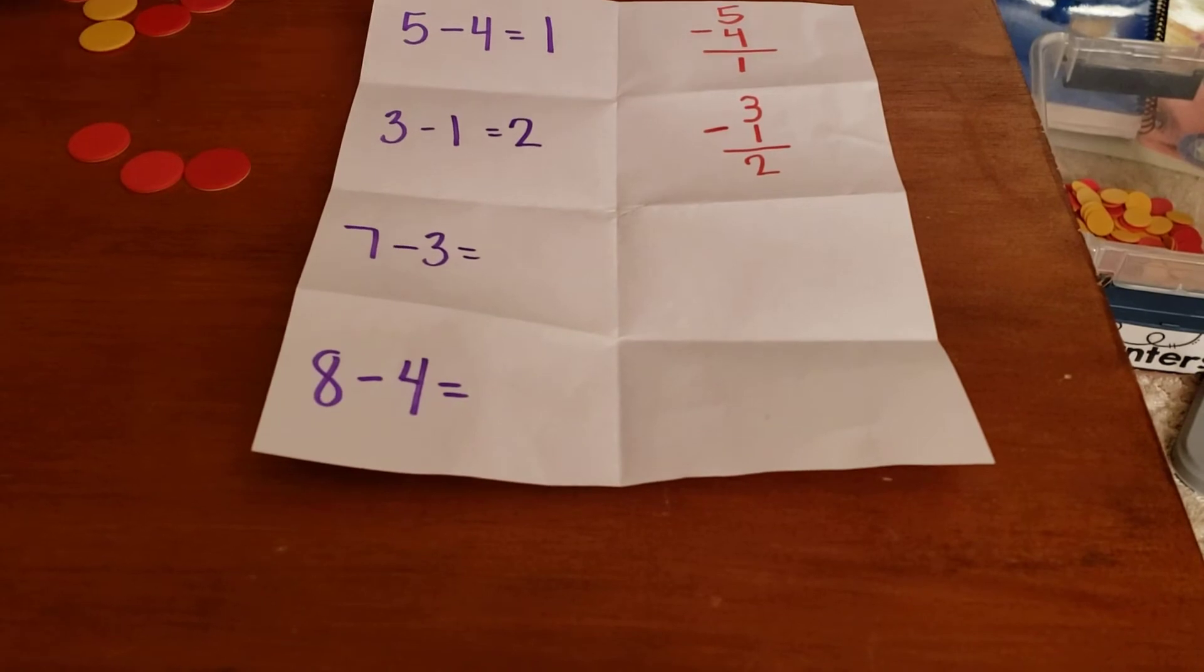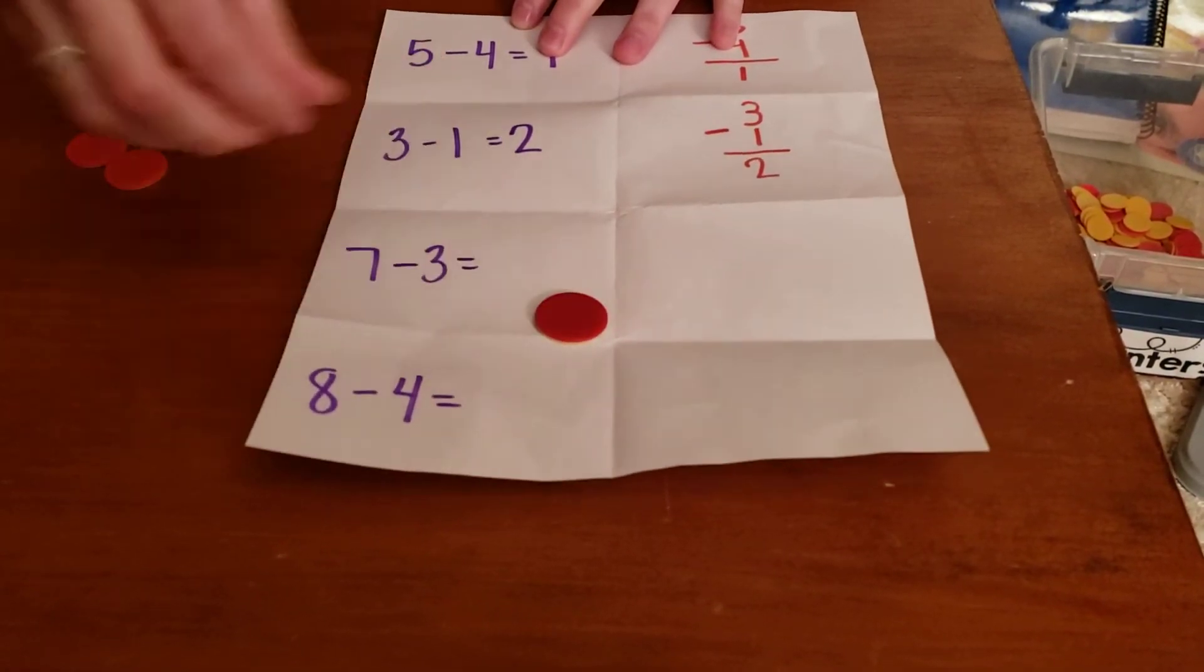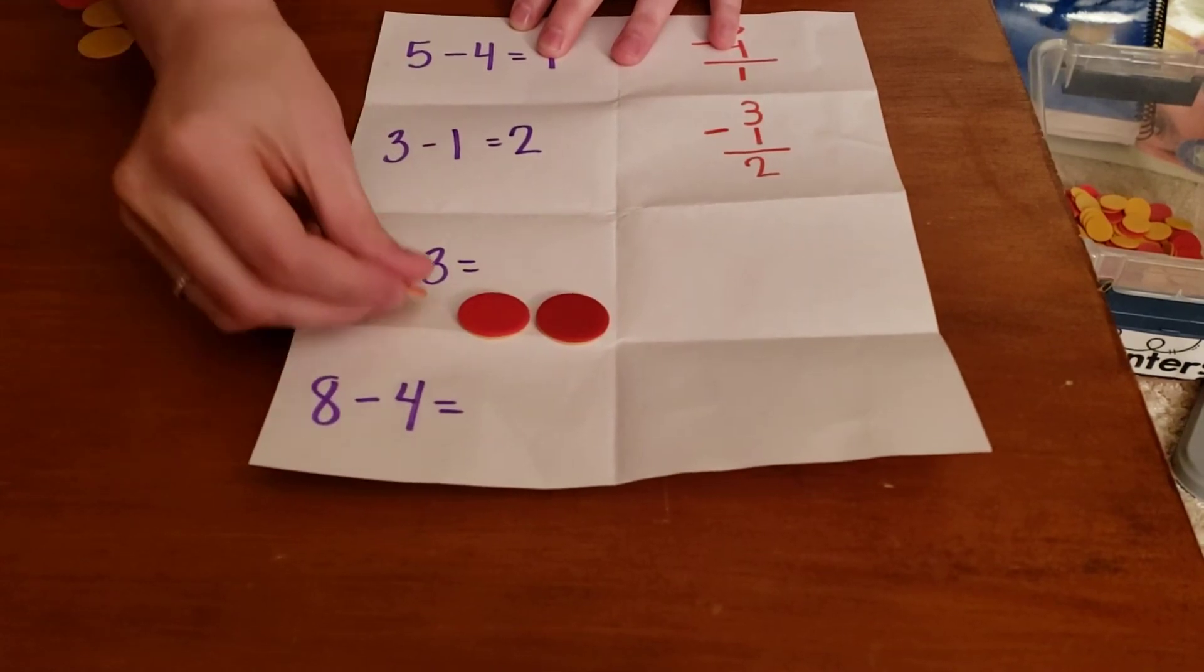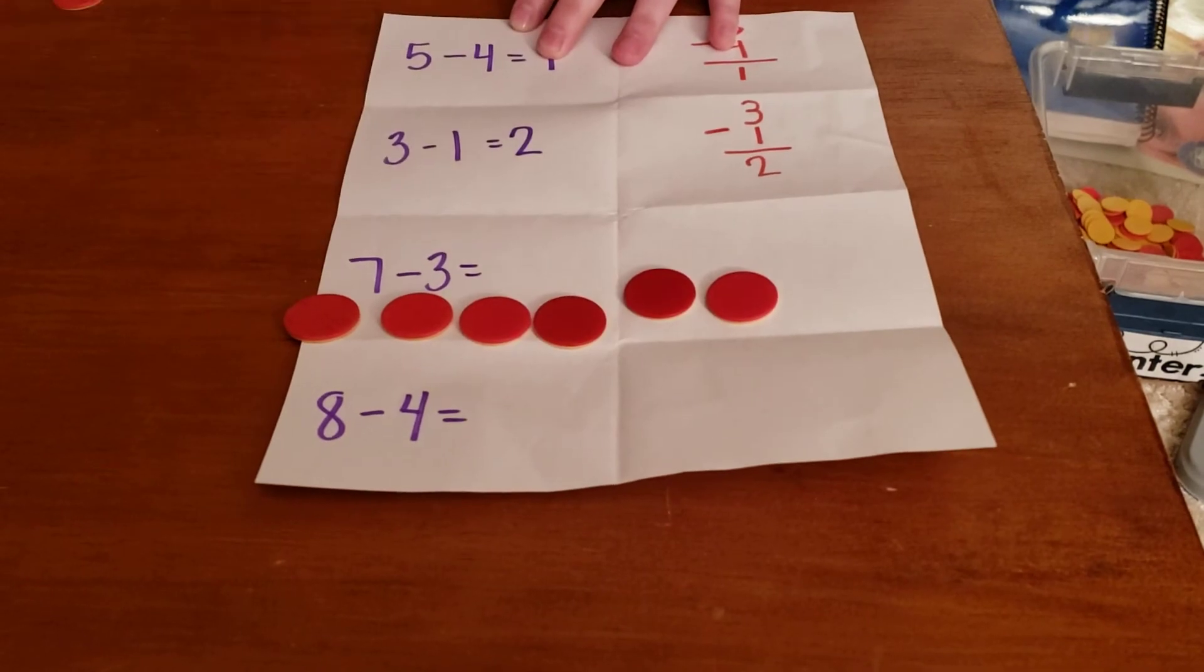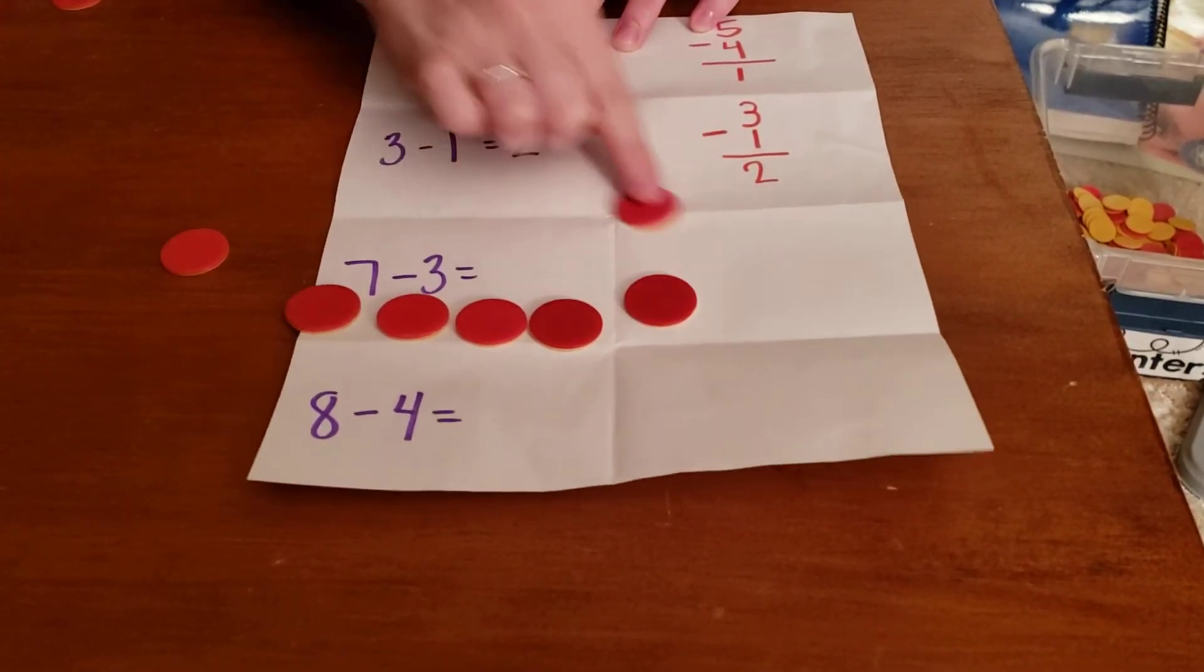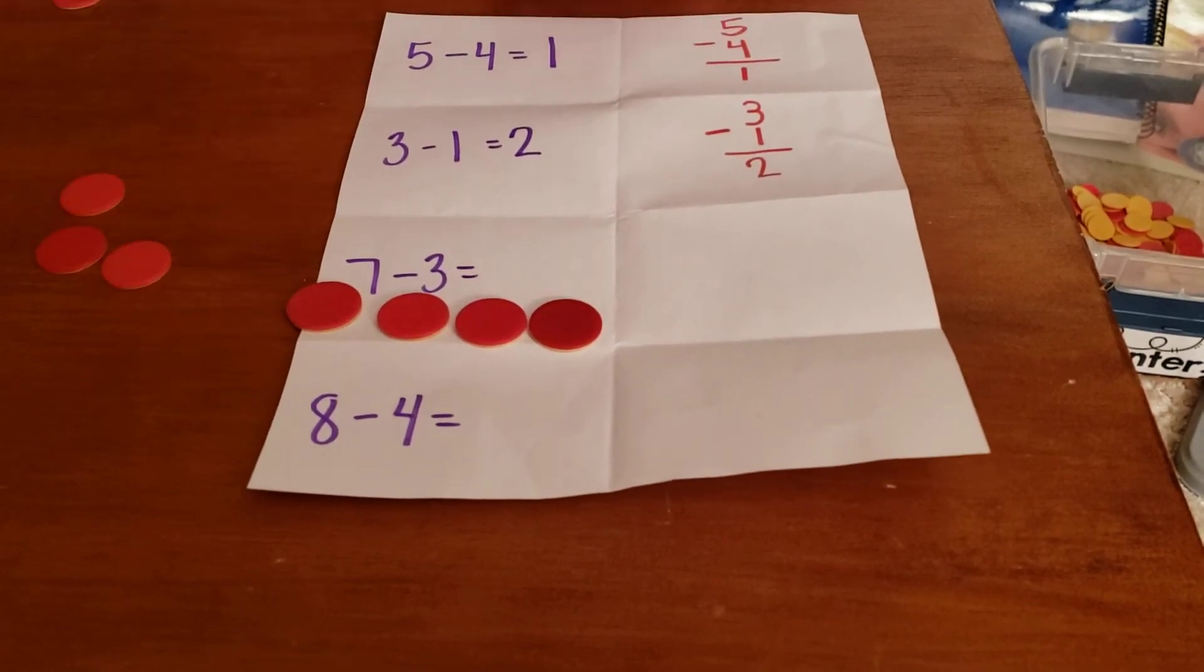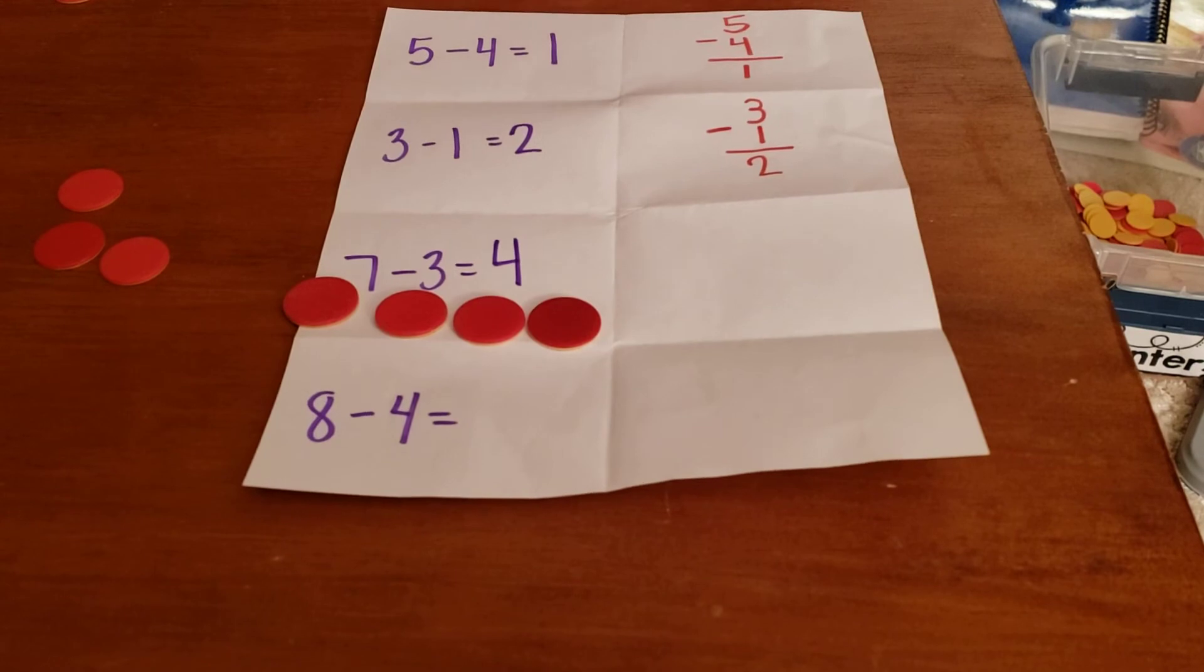All right, next. This one is a lot. Seven minus three. One, two, three, four, five, six, seven. Because I need to take away three. One, two, three. How many are left? One, two, three, four. Good job.